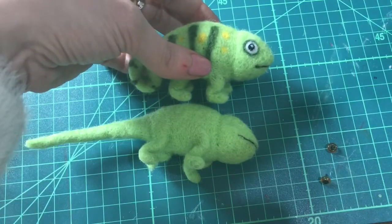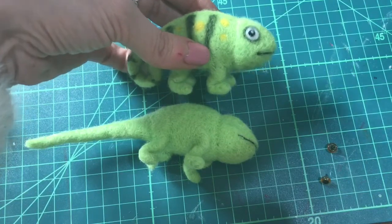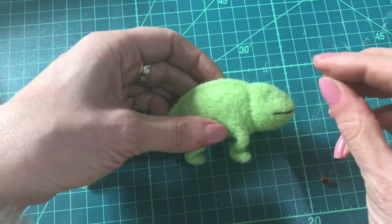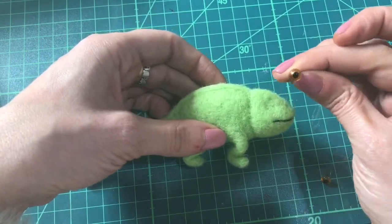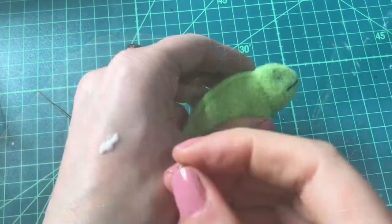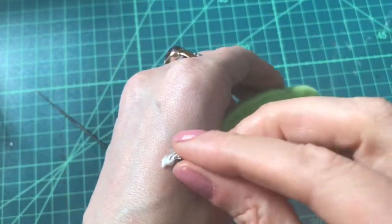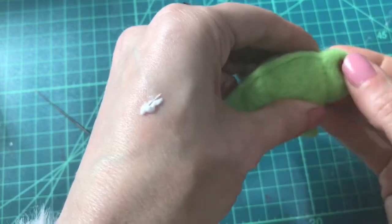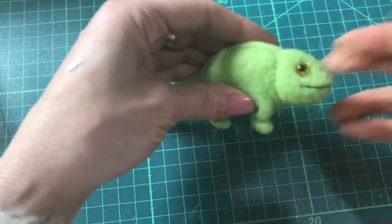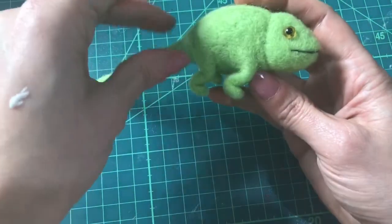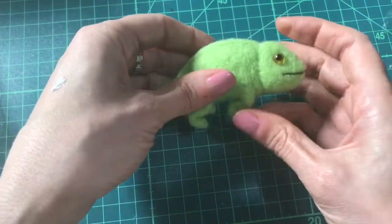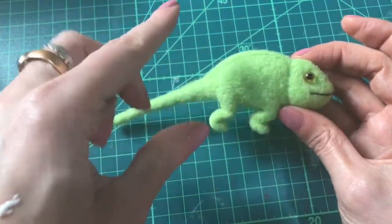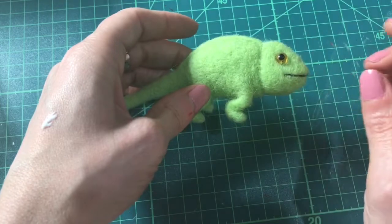You can needle felt on the eyes like I've done with this little guy. Or what I thought I'd do with our friend here is just glue in some little stem back eyes and see what they look like. I'm loving the look of those. The next thing to do is needle felt on his pattern. For this next one I'm just going to do some spots.